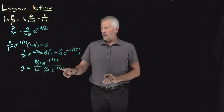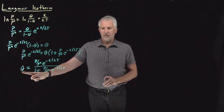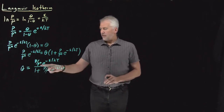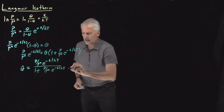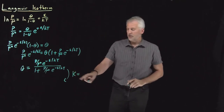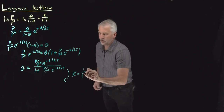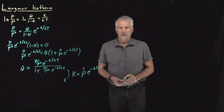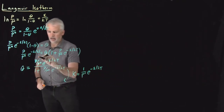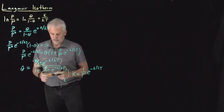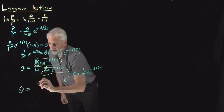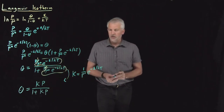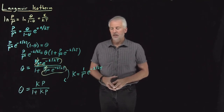So now I can solve for θ: it's the left-hand side divided by the term in parentheses — P over P-naught times the Boltzmann factor, over 1 plus that same term. Since I've got this collection of terms — 1 over P-naught times the Boltzmann factor e to the minus ε over kT — I'll define a constant capital K equal to (1/P-naught) times e to the minus ε over kT. Then I can rewrite the equation as θ = KP over (1 + KP), which is certainly simpler.